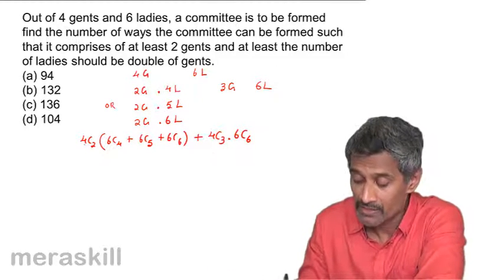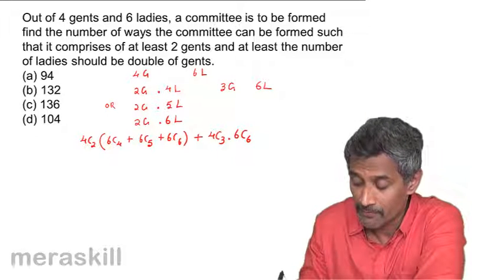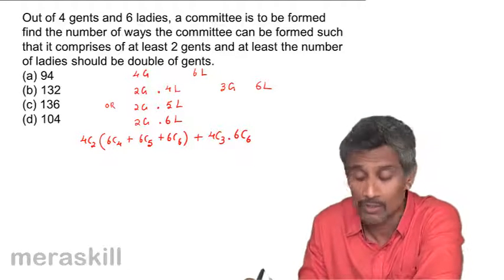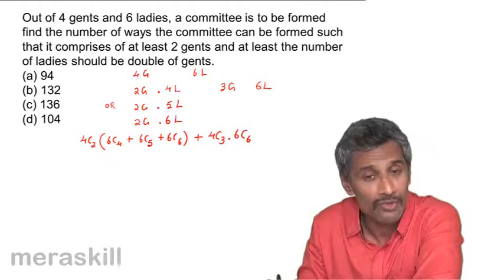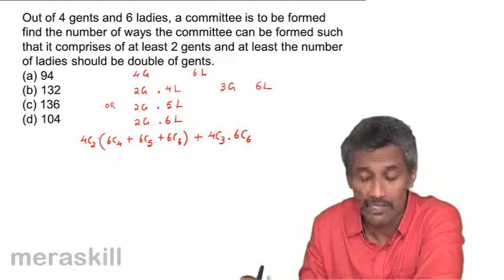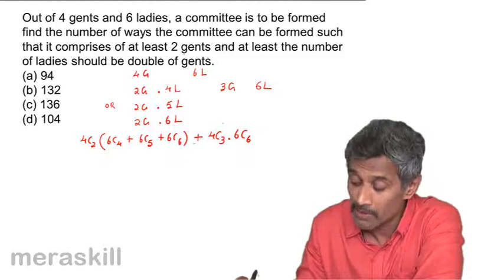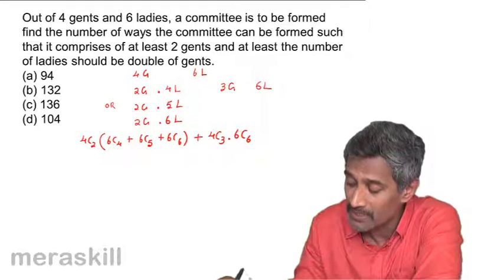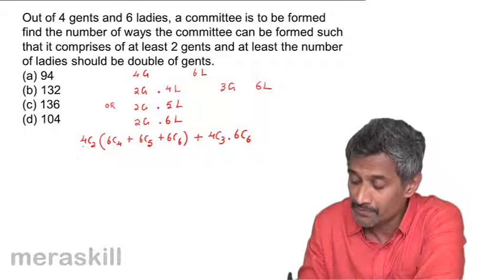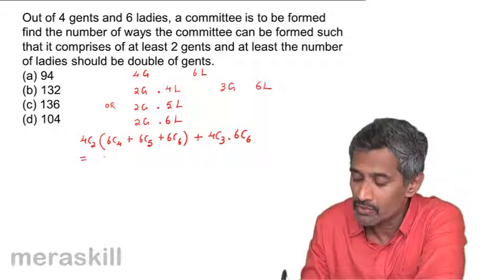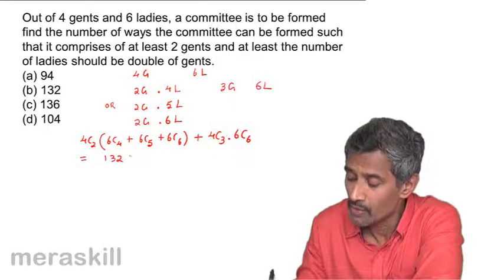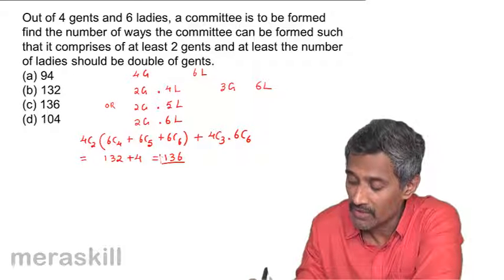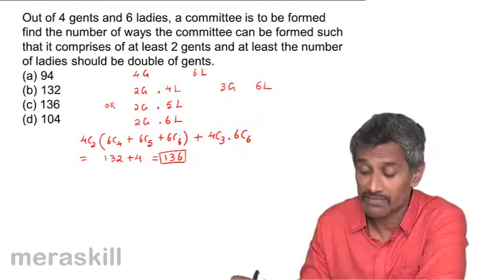So we have two gents with four, five, or six ladies, and three gents with six ladies. Calculating: 4C2 × (6C4 + 6C5 + 6C6) works out to around 132, and 4C3 × 6C6 works out to 4. This gives a total of 136. There are 136 such committees that can be formed.